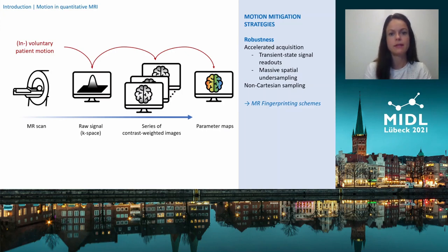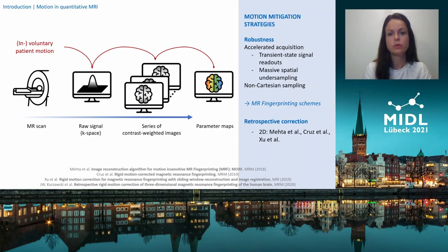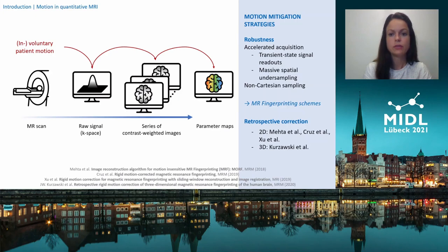The short scan times definitely increase motion robustness so that artifacts are generally reduced in these fast acquisitions. However, they are unfortunately not entirely immune to motion. There has been previous work demonstrating motion correction approaches for MRF-type techniques, but these all focused almost exclusively on 2D acquisition schemes. To also tackle this problem for the general 3D case, Jan Kurtsavsky, together with our collaborators in Pisa, proposed a navigator-based correction in all three dimensions.